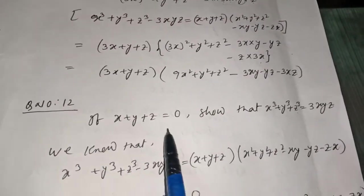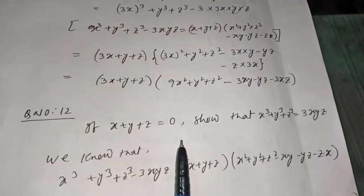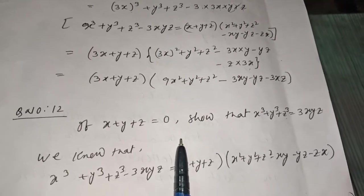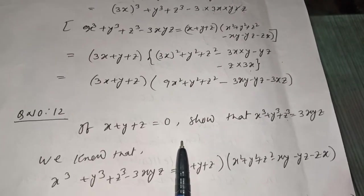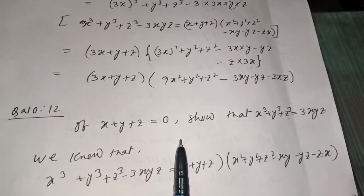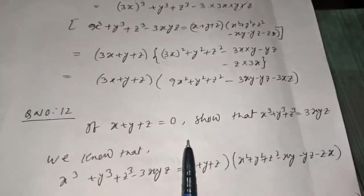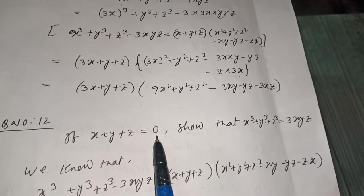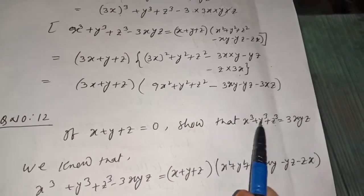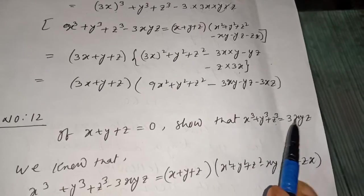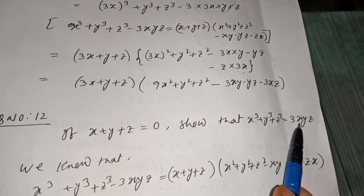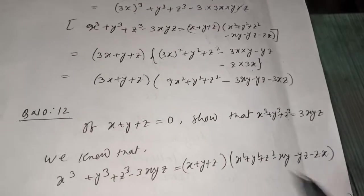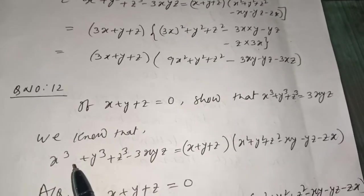Question number 12: If x + y + z = 0, prove that x³ + y³ + z³ = 3xyz. You need to prove this relation — if x + y + z equals 0, then x³ + y³ + z³ must equal 3xyz.